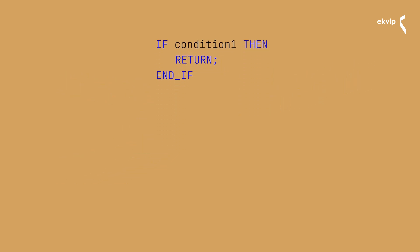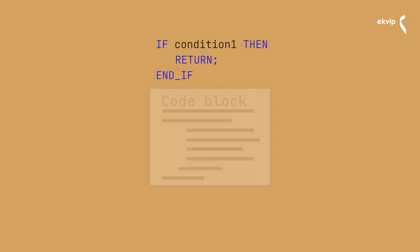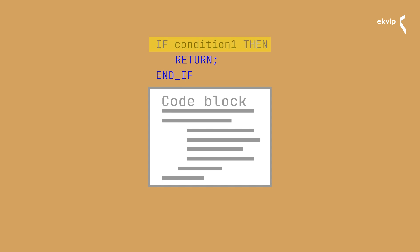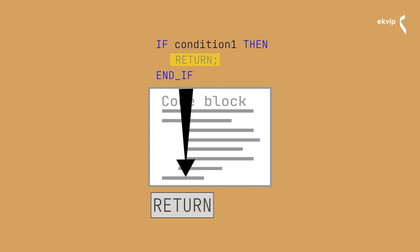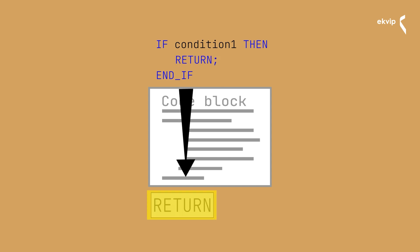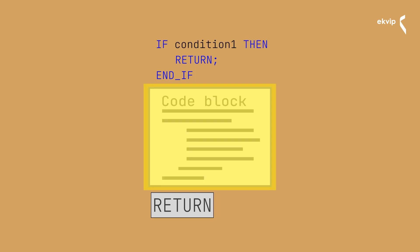If the condition is true, the code that follows won't be executed — instead it jumps directly to the return at the end of the code. If the condition is false, the RETURN instruction won't be executed and the code behind it is executed normally.